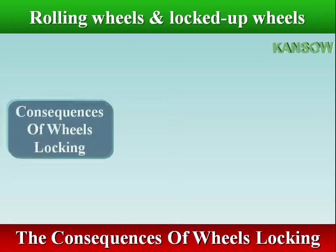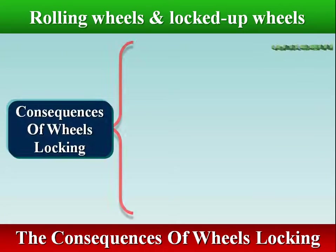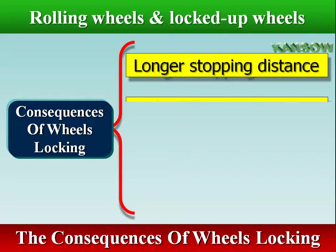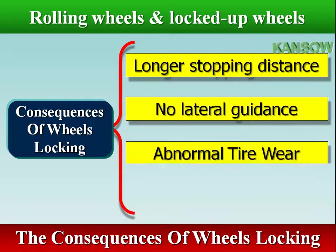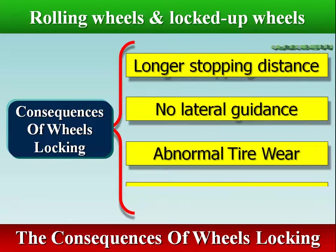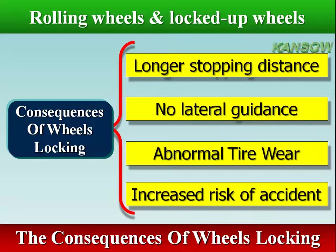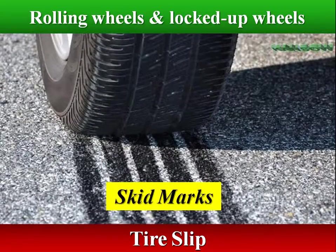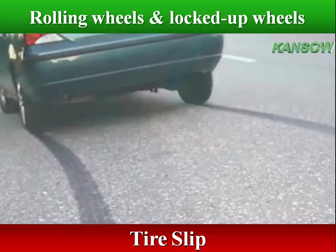The consequences of wheels locking are: longer stopping distance, no lateral guidance, abnormal tire wear, and increased risk of accident. Tire slip is the difference between vehicle speed and the speed of the tire tread moving along the pavement.